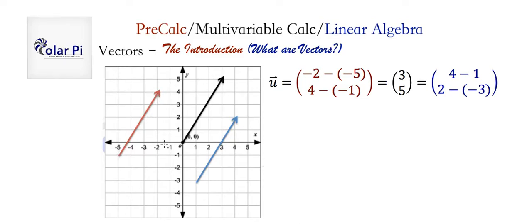It comes as no surprise that when we subtract the coordinates of the initial end from the terminal end of this blue vector, we get the same vector 3, 5.